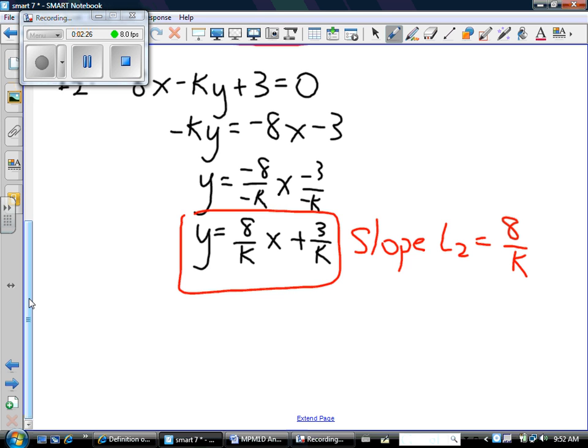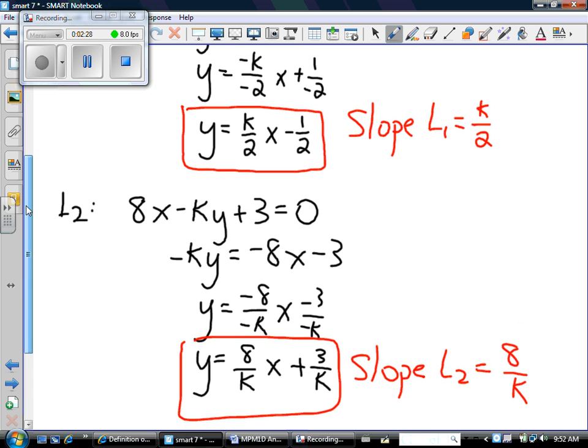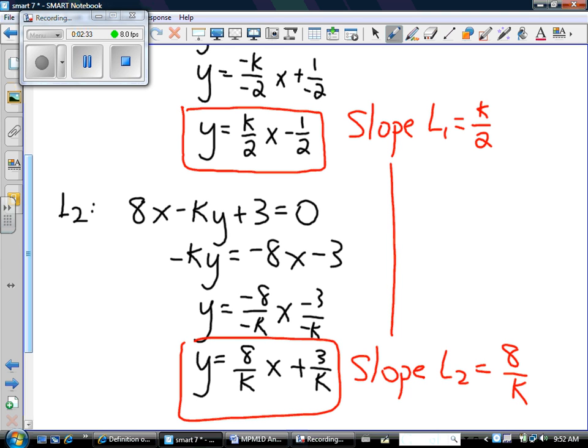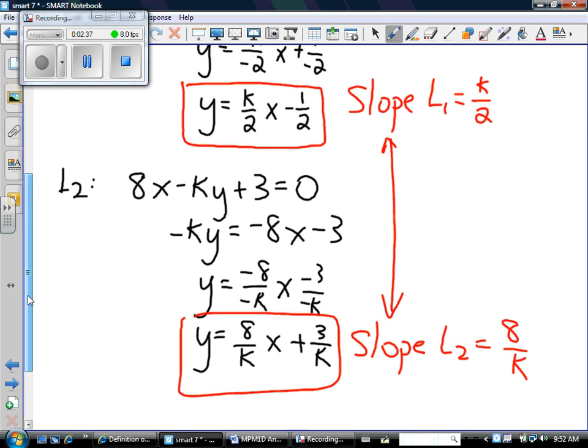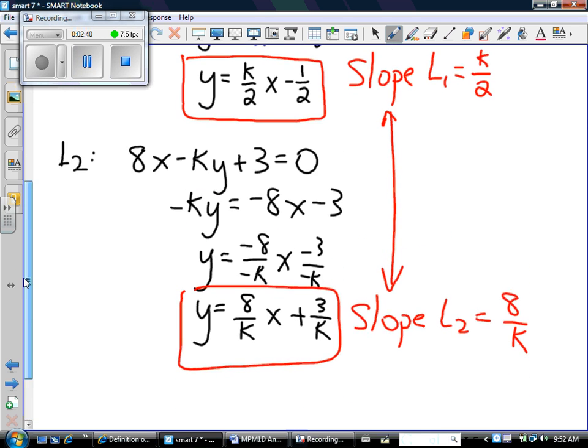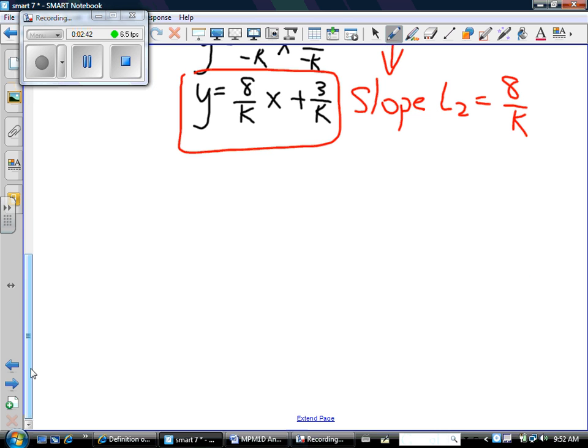Line 1 and line 2, I want them to be parallel. And if they're parallel, then their slopes must be the same. Which means I can take the slope of line 1, which is k over 2, and make it equal to the slope of line 2. They must be equal to each other if I want these lines to be parallel. So I have an equation with an unknown value called k. Let's try to solve.